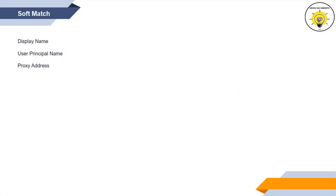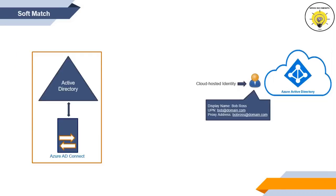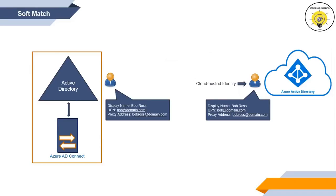Soft match can be performed on the basis of three attributes: display name, user principal name, and proxy address. Let's assume that we have created a user account in Office 365 with display name Bob Ross, user principal name bob@domain.com, and proxy address bobross@domain.com. We will create a user account in on-premise Active Directory with the same values for those three attributes. Then we will run Azure AD Connect sync cycle, and when this sync cycle completes, these two accounts will match with each other and the Office 365 account will become synchronized identity. This is how soft match works.